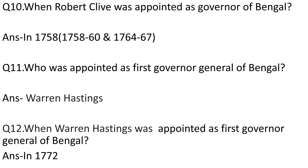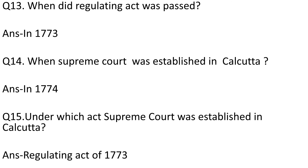Question number 11: Who was appointed as the first Governor General of Bengal? Answer is Warren Hastings. Question number 12: When was Warren Hastings appointed as the first Governor General of Bengal? Answer is in 1772. Question number 13: When was the Regulating Act passed? Answer is in 1773.